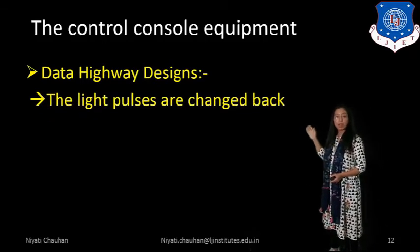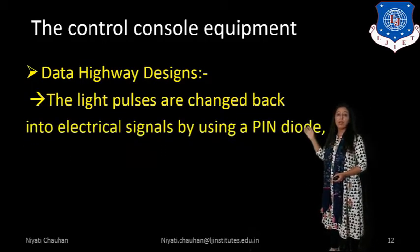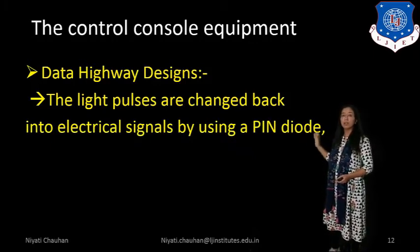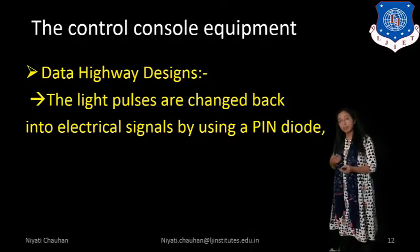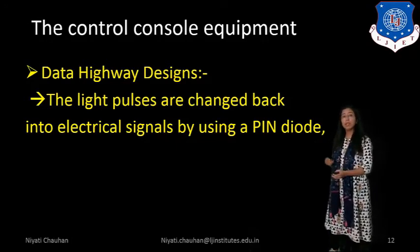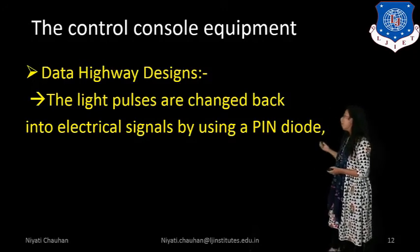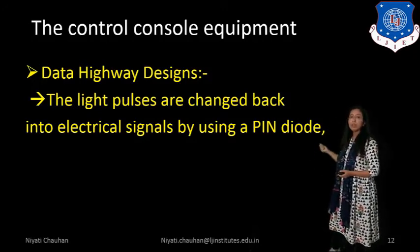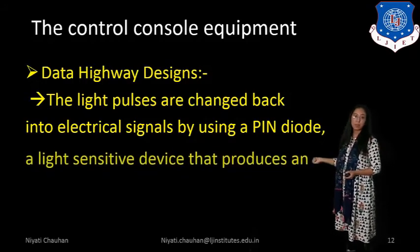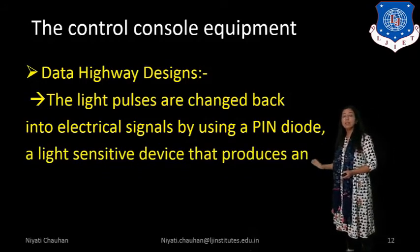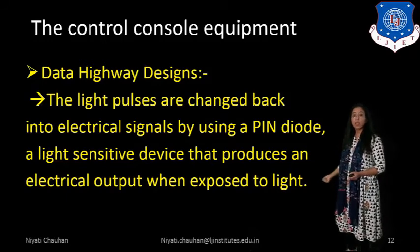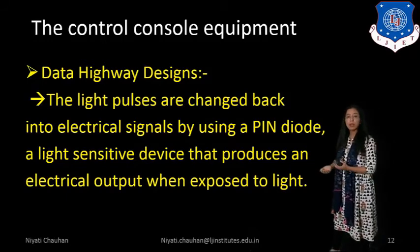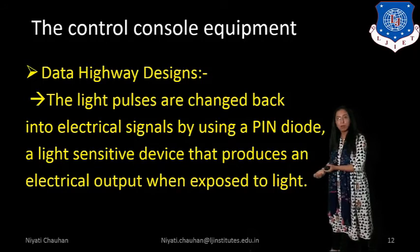The light pulses are changed back into electrical signals by using a PIN diode — a light-sensitive device that produces an electrical output when exposed to light. This converts the signal back into electrical form for further processing.